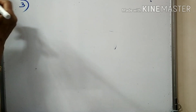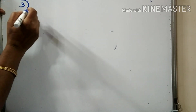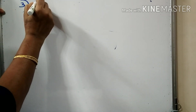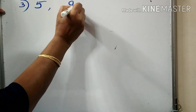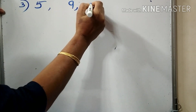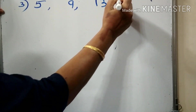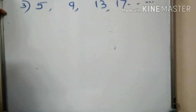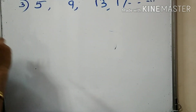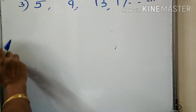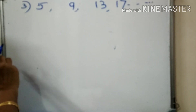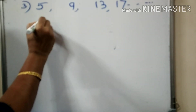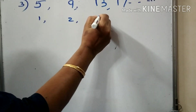Example 3: number sequence 5, 9, 30, 70, etc. — all natural numbers.